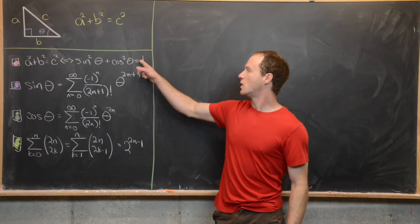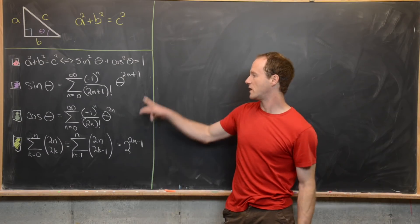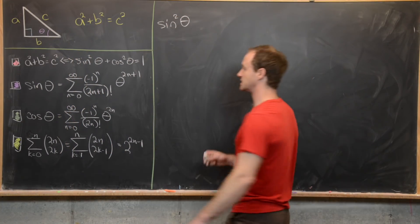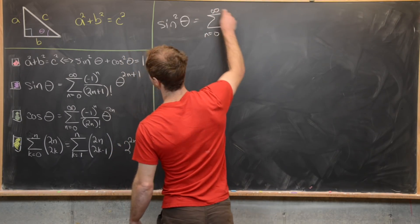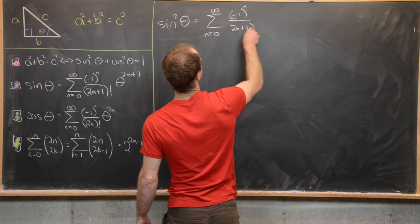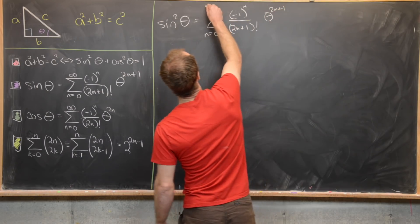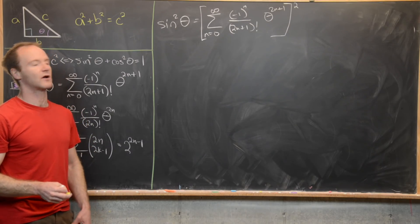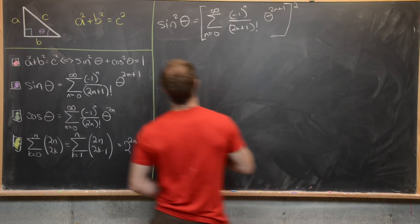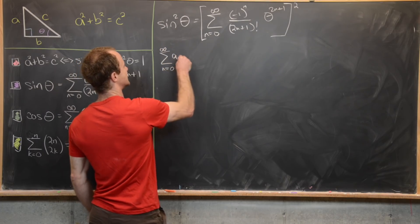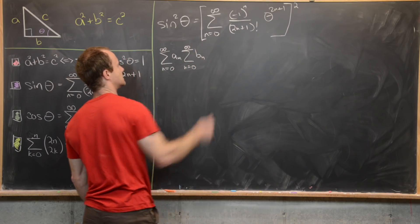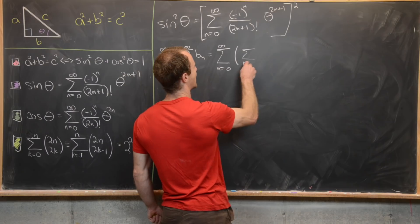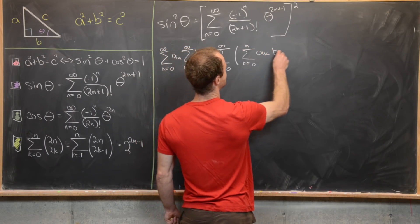Now we're ready for the main result: proving sine squared plus cosine squared equals one using the power series. Focusing first on sine squared — that's the power series with minus one to the n over two n plus one factorial times theta to the two n plus one, all squared. Using the Cauchy product formula for two series, the product of sum a_n and sum b_n equals the sum as n goes from zero to infinity of the sum as k goes from zero to n of a_k times b_{n minus k}.